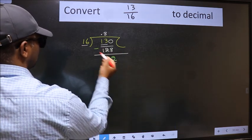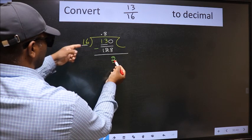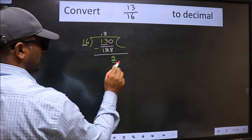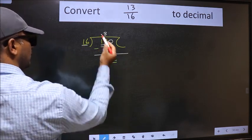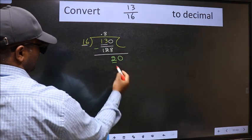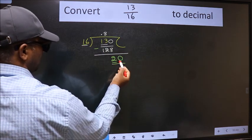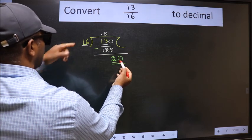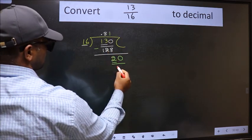Now here we have 2, here 16. 2 is smaller than 16 and we already have the decimal, so this time we can directly take 0, so 20. A number close to 20 in 16 table is 16 once, 16. Now we should subtract, we get 4.